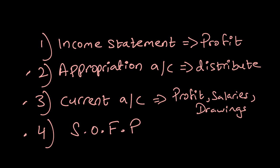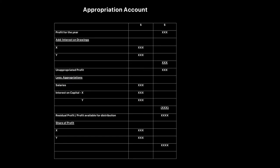Let's understand how the appropriation account looks. Once we have our profit figure from the income statement, we start with our appropriations. First, we add interest on drawings — partners are penalized for making excessive drawings, so they are charged interest. This interest increases the profit, which is why interest on drawings is added. This gives us the unappropriated profit: profit from operations plus interest on drawings earned by the business. This figure is the one that will be distributed.